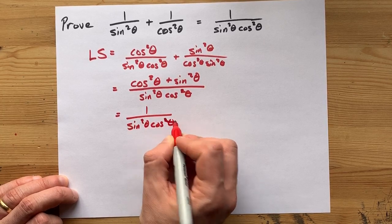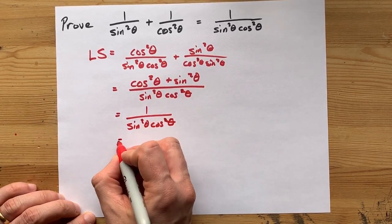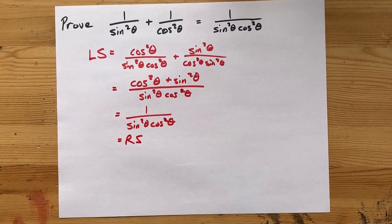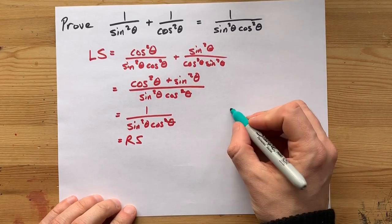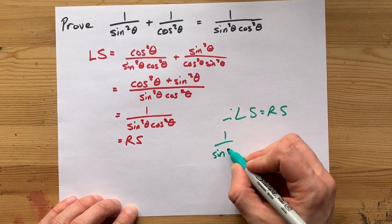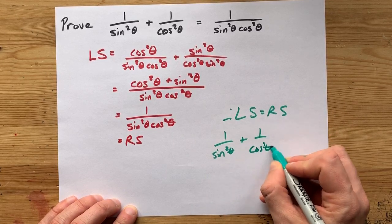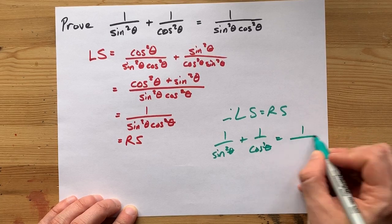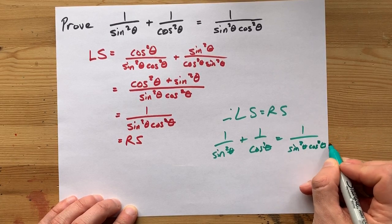And as soon as we do that replacement, we're done. That left-hand side has been manipulated to become the right-hand side. And so, to celebrate, we say the left side equals the right side, and 1 over sine squared theta plus 1 over cos squared theta is equal to 1 over sine squared theta cos squared theta.